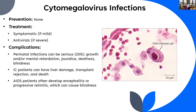There is no vaccination for CMV — it doesn't typically cause severe damage in most people. Treatment is symptomatic for mild cases; antivirals are used for severe infection. Perinatal infections can be very serious, causing growth deficits, mental deficits, jaundice, deafness, and blindness. Immunocompromised patients can develop liver damage, transplant rejection, and death. People with AIDS may develop CMV encephalitis or progressive retinitis causing blindness.